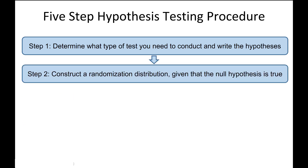Step 2 is to construct a randomization distribution given that the null hypothesis is true. This is where you'll go to StatKey and input your sample data. If you're doing a test for a single mean or single proportion, you'll also need to enter the number from the hypotheses. Then you'll take at least 5,000 re-samples to build your randomization distribution. This is the sampling distribution that you'll use in the next step.